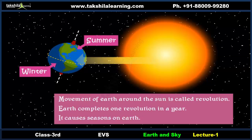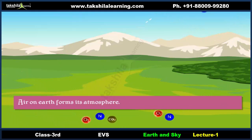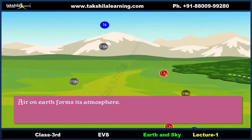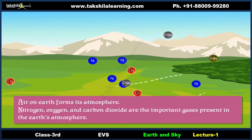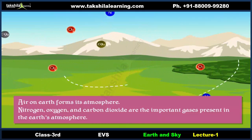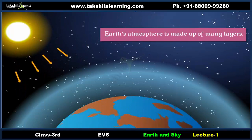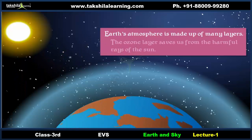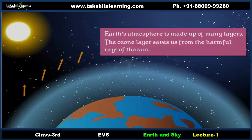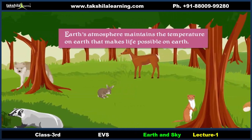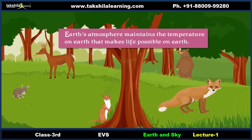Air on Earth forms its atmosphere. Nitrogen, oxygen, and carbon dioxide are the important gases present in the Earth's atmosphere. Earth's atmosphere is made up of many layers. The ozone layer saves us from the harmful rays of the Sun, and Earth's atmosphere maintains a temperature that makes life possible on Earth.